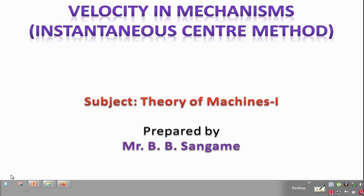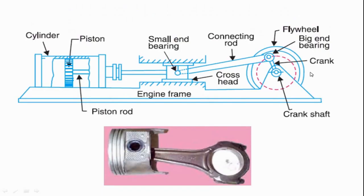Today we are going to see how the velocity of a mechanism is calculated using the instantaneous center method. Sometimes a body has a simultaneous motion of rotation as well as translation, such as a wheel of a car or a sphere rolling on the floor. Such motion will have the combined effect of rotation and translation.